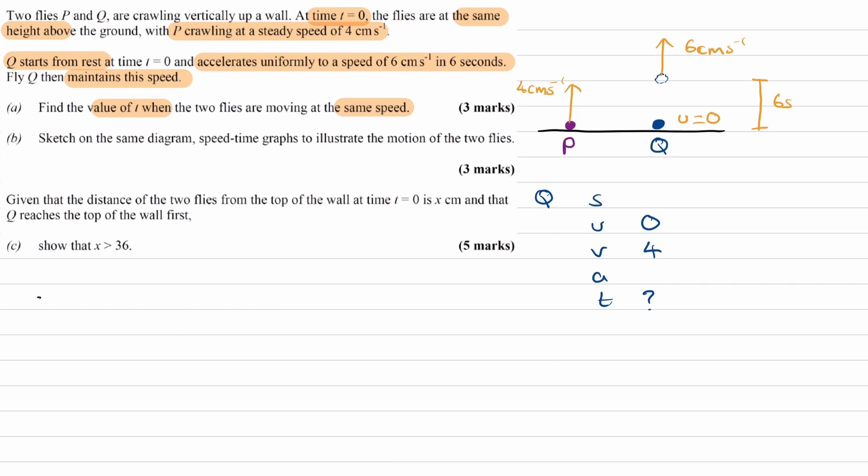We can then use that acceleration in this SUVAT table. So let's write out a second SUVAT table for Q. Initial speed is 0. Final speed is 6. Acceleration we're trying to work out. And this takes 6 seconds. The equation that relates those four things is V equals U plus AT. Rearrange for A. A is V minus U over T. This is then 6 minus 0 over 6, which is 1 m per second squared.